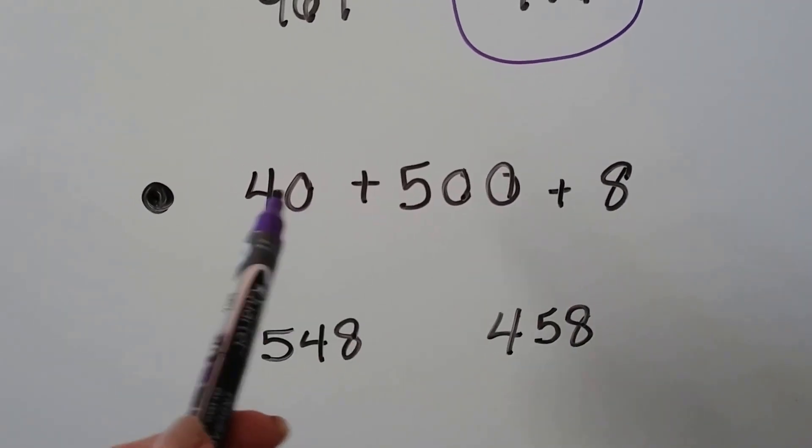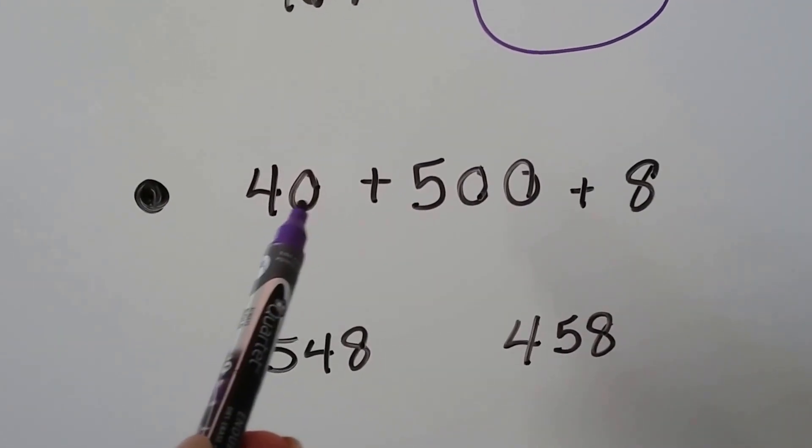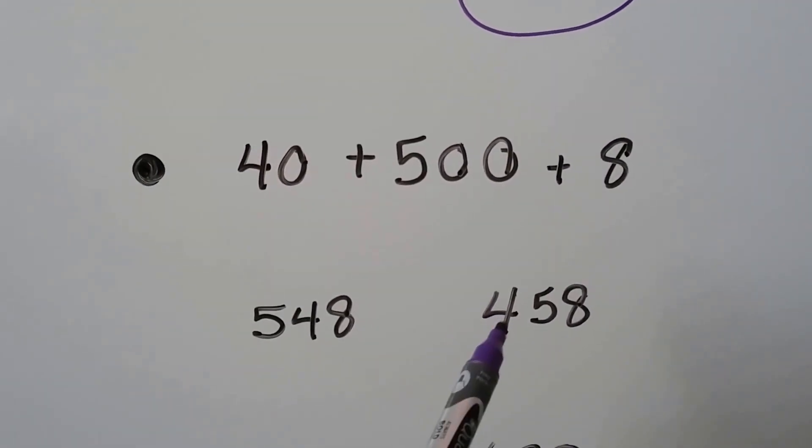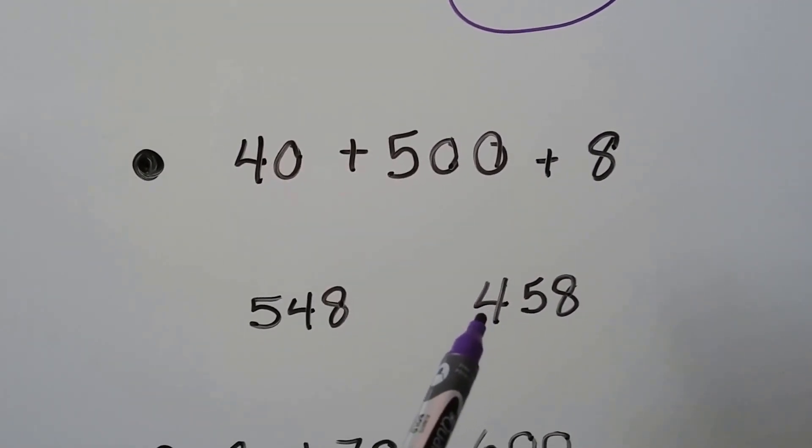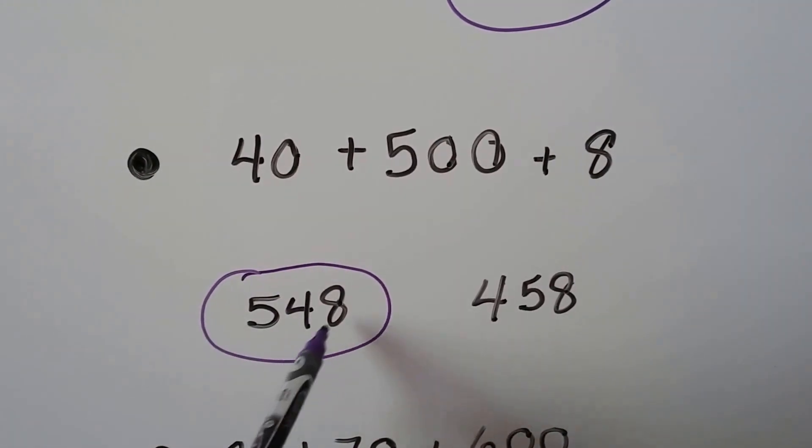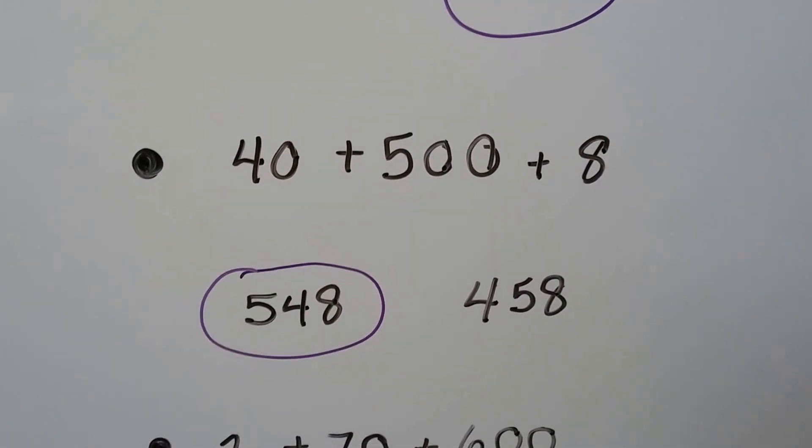So when you're doing your homework, be careful. If you want to look at how many digits it has, that's 4 tens. It's not this one. That's 4 hundreds. So we know it's this one. It's 5 hundreds, 4 tens, and 8 ones. 5 hundreds, 4 tens, and 8 ones. That was a tricky one.